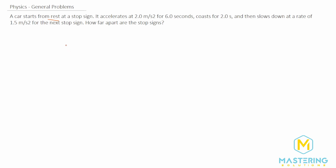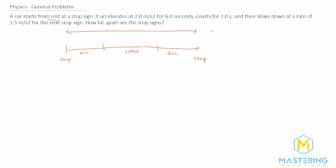If we draw a picture of what's going on, we have three sections. On the left we have one stop sign and on the right we have the other stop sign. The first section is where we're accelerating, then we coast for a certain amount of time, and then we decelerate until we stop at the last stop sign. We want to find the total distance between the two stop signs, and we'll do it chunk by chunk.